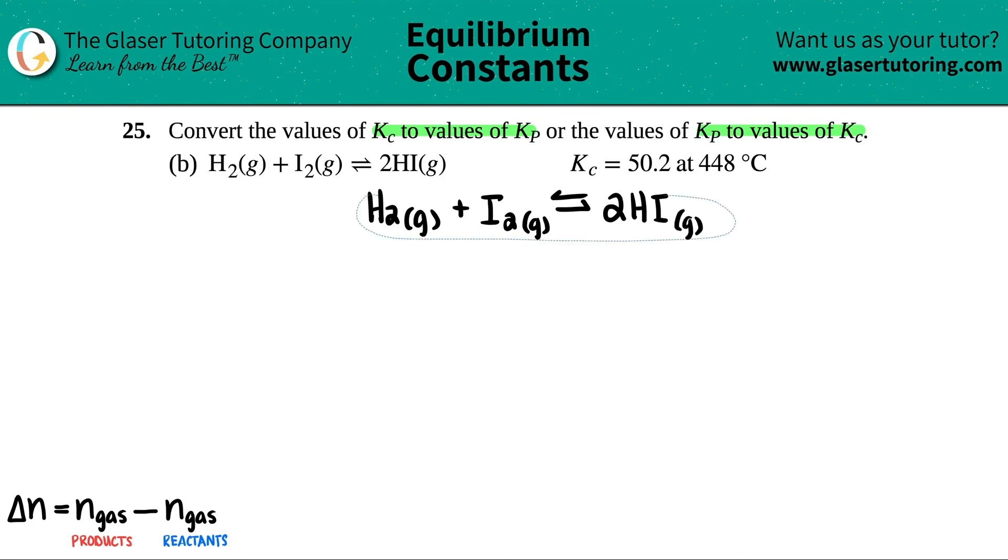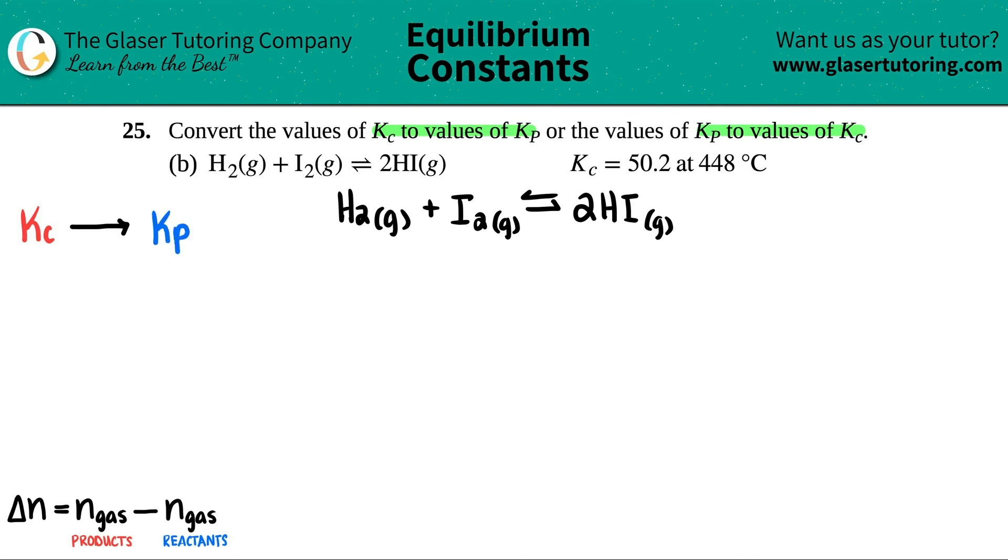All right, so in this case, all we just have to do is convert the K values. They gave me a Kc here. So all we have to do is just convert to a Kp value. So there's only one formula that you have to know that has both Kc and Kp in there. It's this formula right here.